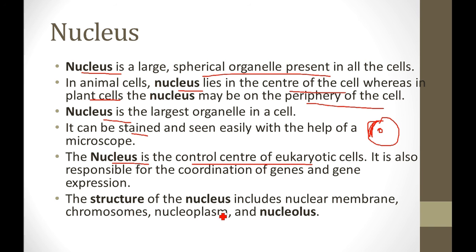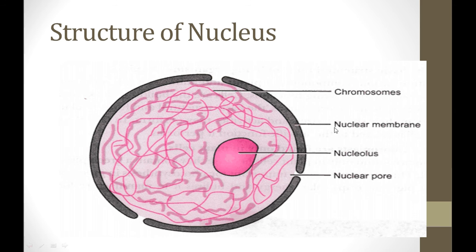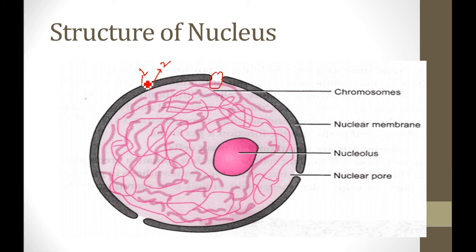The next is the structure of the nucleus. The structure of the nucleus contains: the first is the nuclear membrane, the second is the chromosome, the third is the nucleoplasm, and the fourth is the nucleolus. Now see the diagram — this is the structure of the nucleus. You can see two membranes: the first one and then the second one. This is the outer membrane of the nucleus, and the second membrane is the inner membrane.